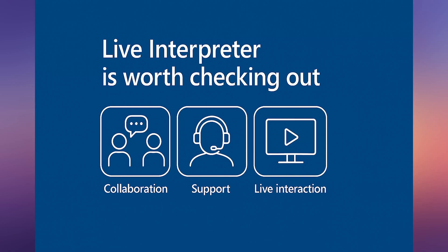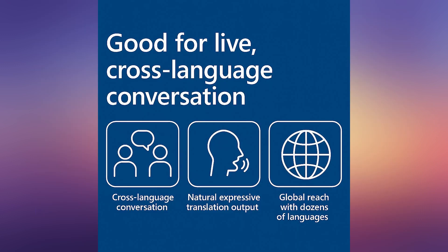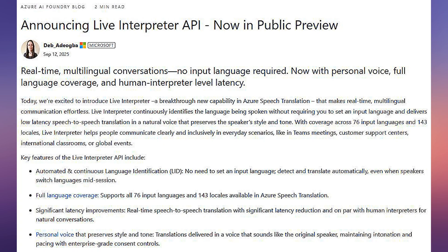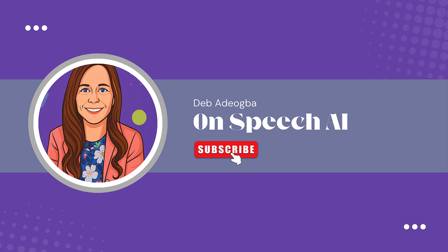Here's the bottom line: if you're building apps for collaboration, support, or live interaction, this API is worth checking out. It offers seamless cross-language conversation, natural expressive translation output, and global reach with dozens of languages. And since it's in public preview, you can try it today. What would you use it for — meetings, events, support calls, or something else? Drop your ideas in the comments, and if you found this helpful, hit subscribe for more updates on Speech AI. Thanks for watching.